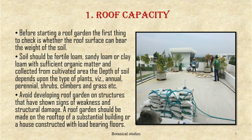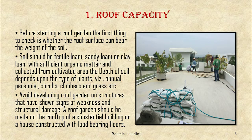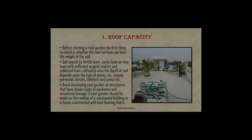The form of garden may be formal or informal. First, check roof capacity — before starting a roof garden, the first thing to check is whether the roof surface can bear the weight of the soil. Soil should be fertile loam, sandy loam, or clay loam with sufficient organic matter collected from cultivated areas. The depth of soil depends upon the type of plant — annuals, perennials, shrubs, climbers, and grasses. Avoid developing roof gardens on structures showing signs of weakness or structural damage; a roof garden should be on a substantial building constructed with load-bearing walls.